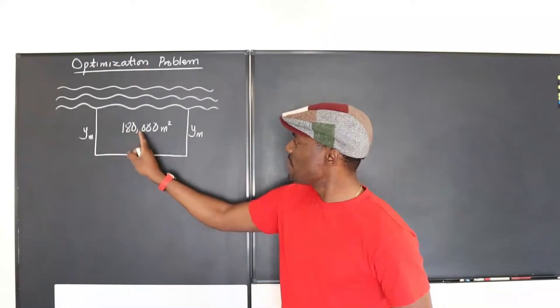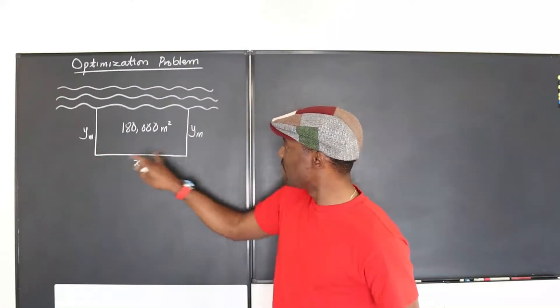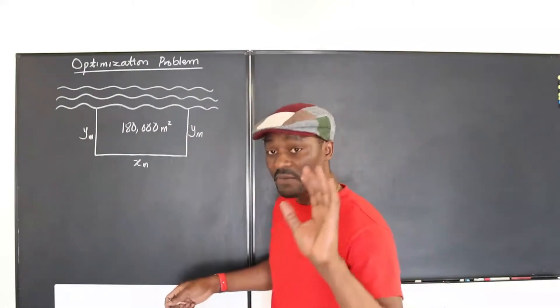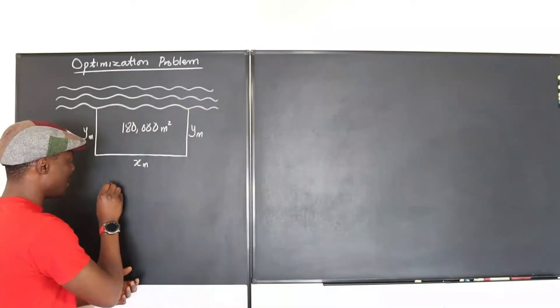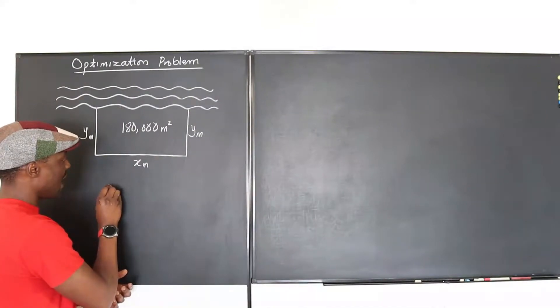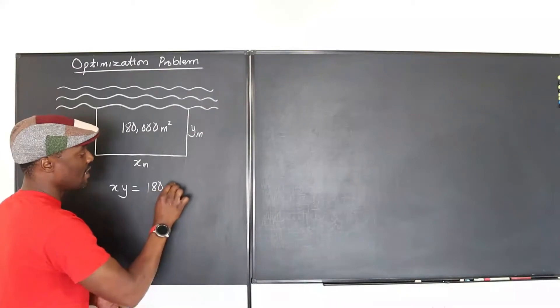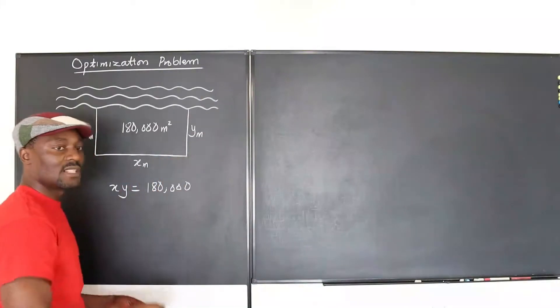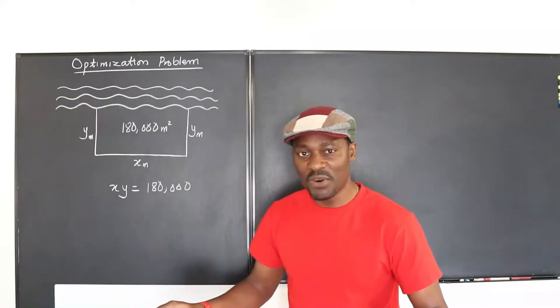Now what do we have? We have an area. How do you find the area of a rectangle? We know that it's going to be the length multiplied by the width. So we can first write the first equation that we know, which is going to be that the area xy is going to be 180,000. Length times width, 180,000 is the area.